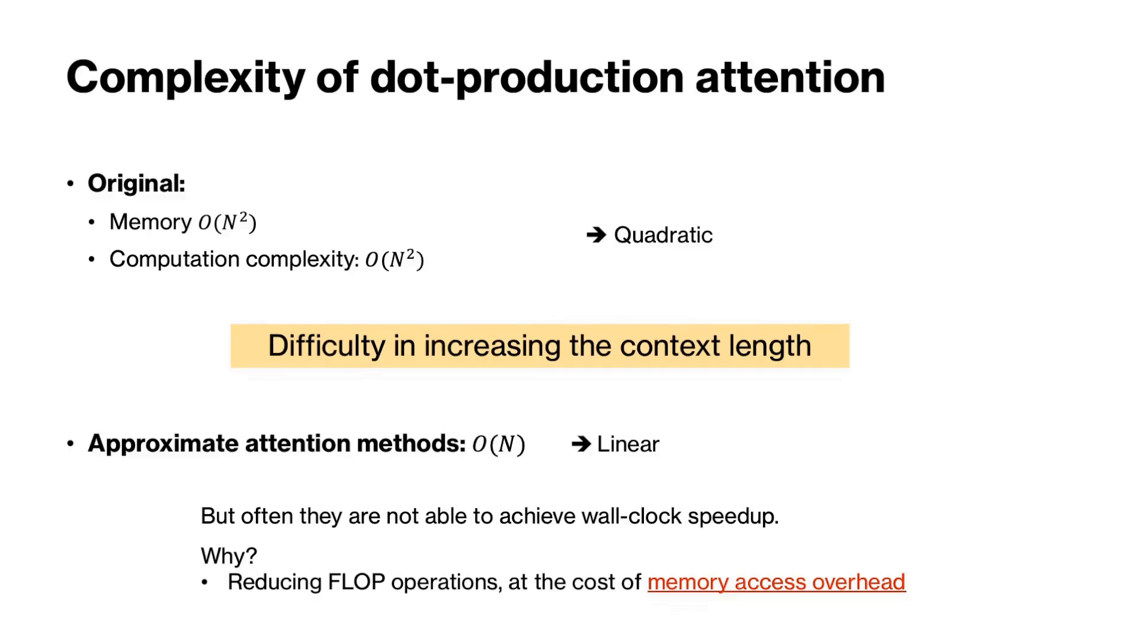The reason is those algorithms were only focusing on reducing the computational complexity, whereas the major bottleneck of the attention algorithm may not be its arithmetic complexity. In fact, as we will see in this video, with modern GPUs the major bottleneck of dot product attention is the overhead cost of memory access.